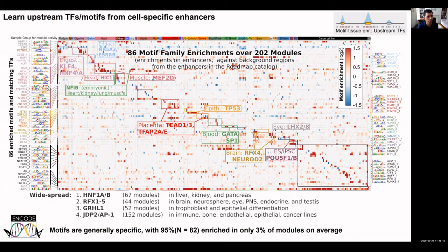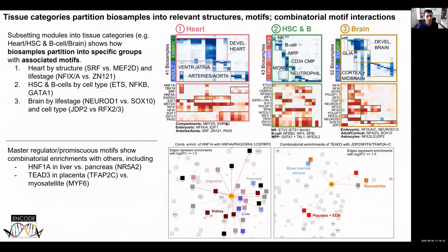A small subset of very broadly active motifs partners with multiple tissue-specific motifs to define tissue-specific gene regulatory patterns. These tissue categories also partition biosamples based on their relevant structures, motifs, and combinatorial motif interactions. Our interactive browser allows users to click on individual motifs, factors, and tissues to explore the regulatory inferences in detail.